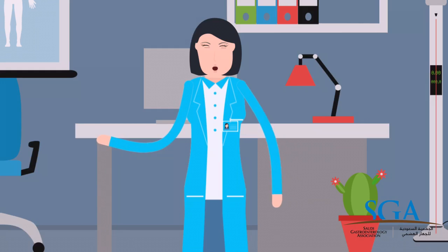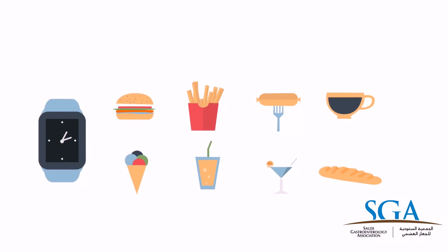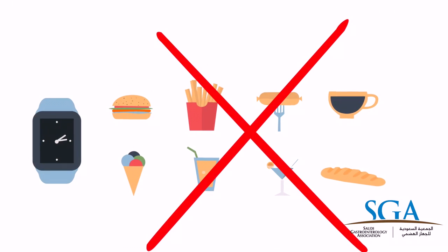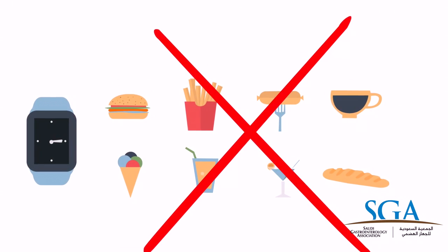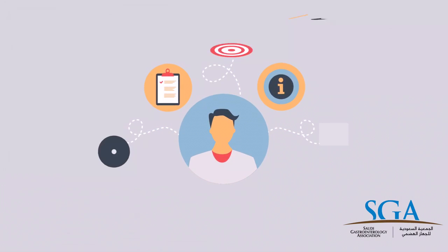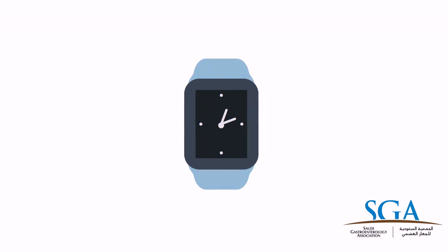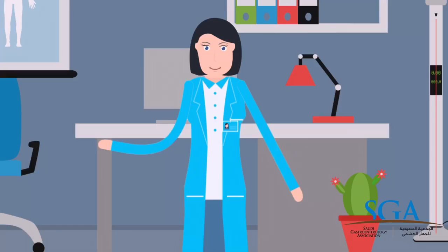How to prepare for it? The patient needs to fast for at least 8 hours prior to endoscopy. Check with your endoscopist if you need to stop any of your medications. You have to come to the endoscopy unit at your allotted time.